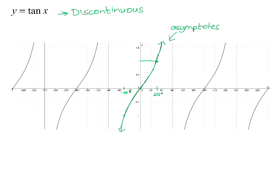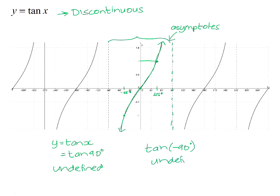We know from trigonometry that y equals tan x is undefined when x is 90 degrees, and that is why we have an asymptote at 90 degrees. The tan of negative 90 degrees is also undefined. The period of the tan graph is 180 degrees — between the asymptotes, one full cycle spans 180 degrees, meaning the asymptotes repeat every 180 degrees, so we will have another at 270, at negative 270, etc. The amplitude of the tan graph is undefined, because it carries on to infinity on both sides.